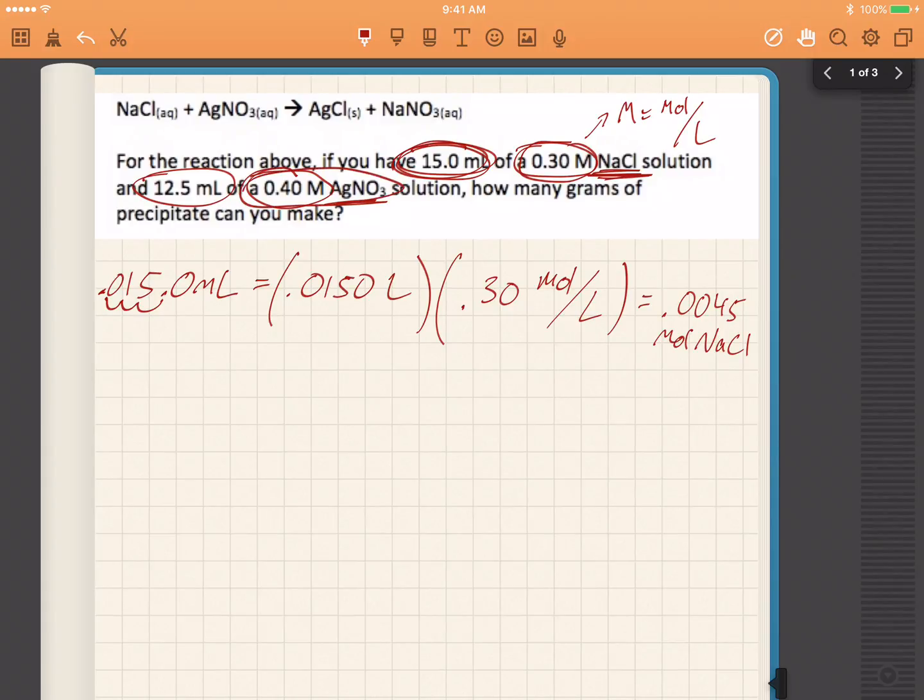0.0150 times 0.30 is 0.0045 moles of NaCl. Now I'll figure out how much of this stuff I've got. I'm going to take the 12.5 milliliters of that and first of all convert it to liters, 0.0125 liters.